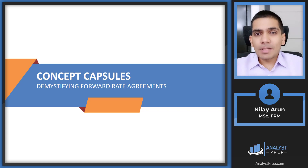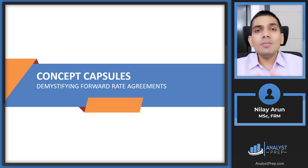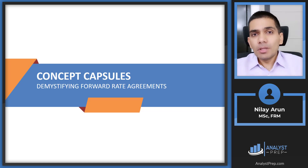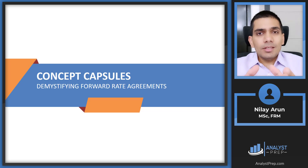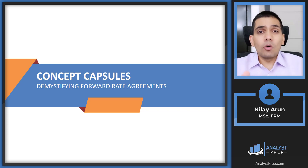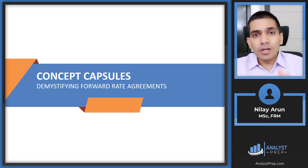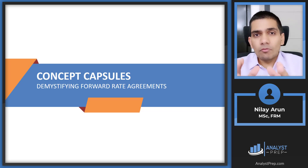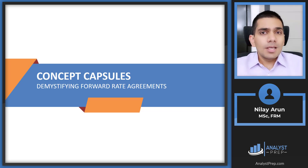Let's start with the concept capsules for today. The topic we're going to look at is demystifying forward rate agreements, or as we popularly call them, FRA contracts. These are variants of your traditional forward contracts — contracts you're already familiar with, such as a commodity forward contract, a stock forward, or a bond forward contract.